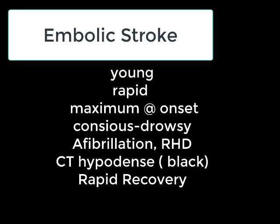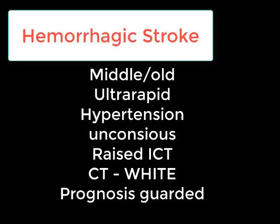Next is hemorrhagic stroke, which again occurs in middle to old age. Onset is very ultra-rapid. Hypertension is the commonest cause. Patients are usually unconscious and present with raised ICT signs. On CT it appears white. Recovery is difficult and the prognosis is guarded.